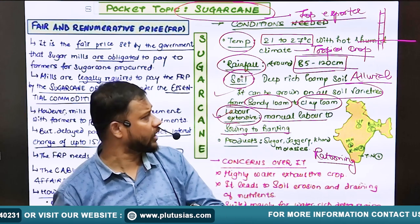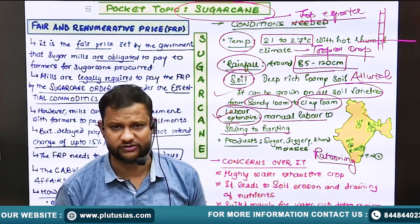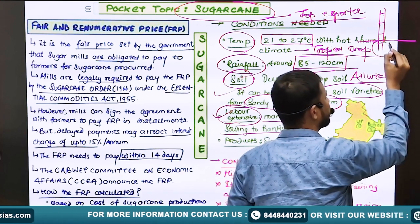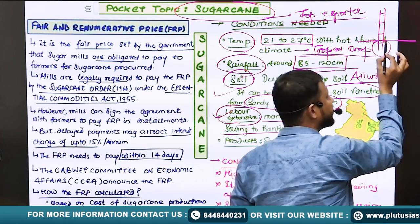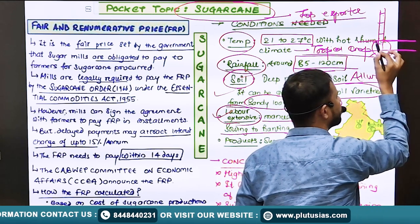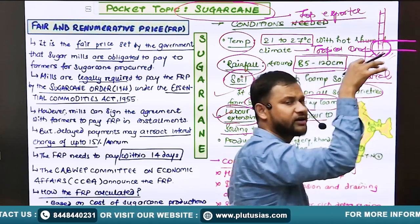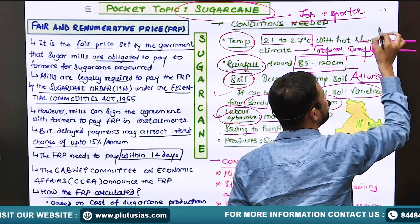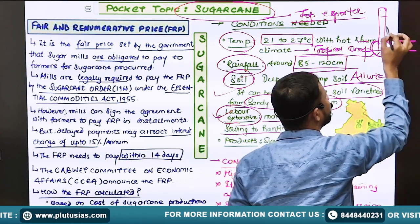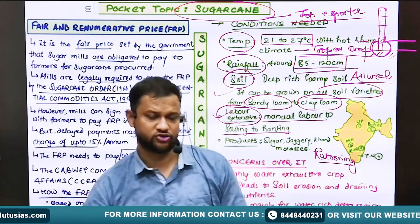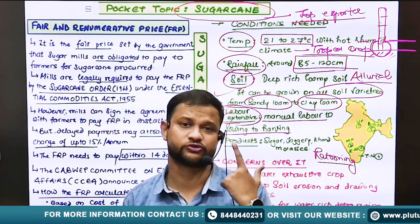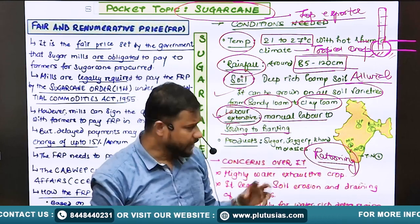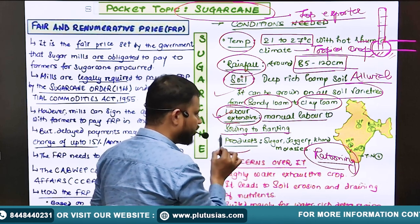This crop is equally famous for the method of ratooning. Ratooning means the crop is cut from a particular height by the means of the root itself, such that the node area remains connected with the ground. After harvesting, it regrows again, and this regrowth ensures faster growth. This process is called the ratooning process.